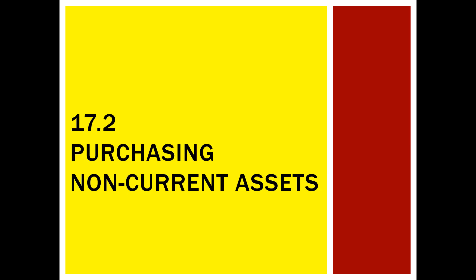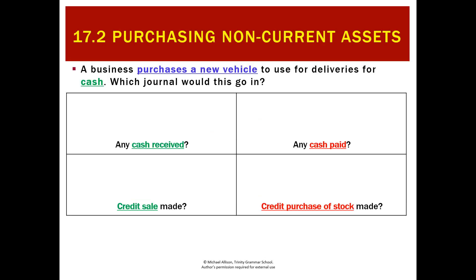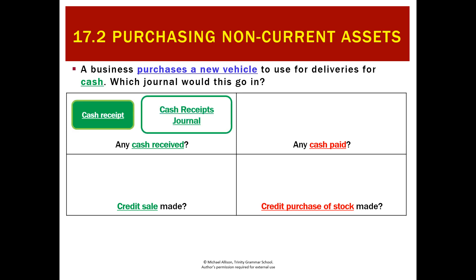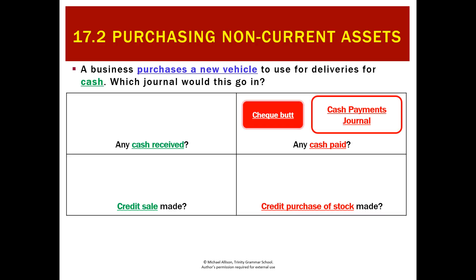Non-current assets can be purchased in a few different ways. If we buy a new vehicle and pay for it with cash, no cash is received by the business, so it won't go in the cash receipts journal. However, cash was paid, so buying a new vehicle for cash would go in our cash payments journal.